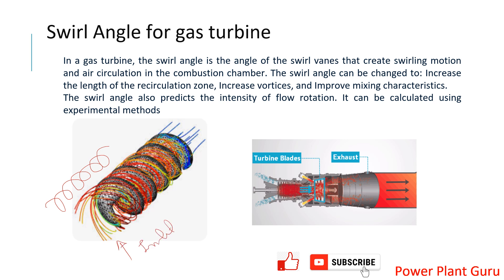In this swirling motion, compression happens. If we imagine the inlet on one side and the outlet on the other, there will be pressure P1 at the inlet and P2 at the outlet, where P2 is higher than P1. After that, combustion happens, and then the flow passes through the turbine — through static blades and then rotary blades — and the swirling phenomenon continues throughout.